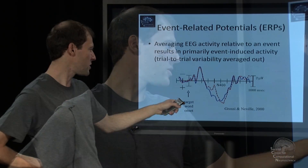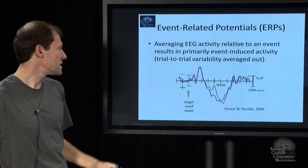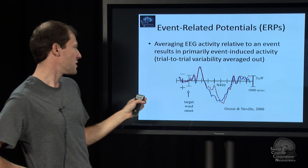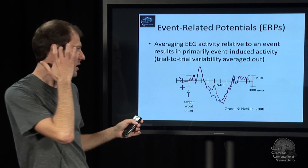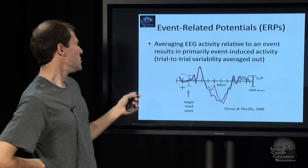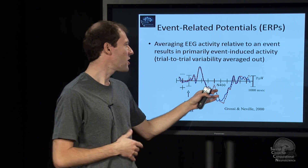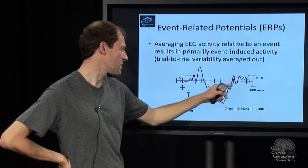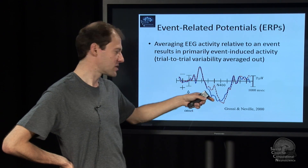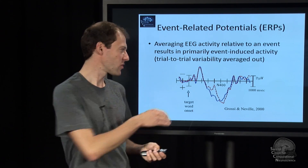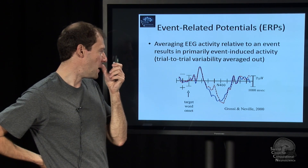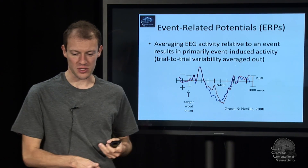The event-related potential is the potential related to the event. In this case, a word was being presented — either expected or not expected, or correct or wrong. If you compare correct versus incorrect, you get different time courses: all the corrects in red, the incorrects in blue. When you subtract them, you can see from the averaged EEG whether the word was correct or not, which is a way to infer cognitive state.